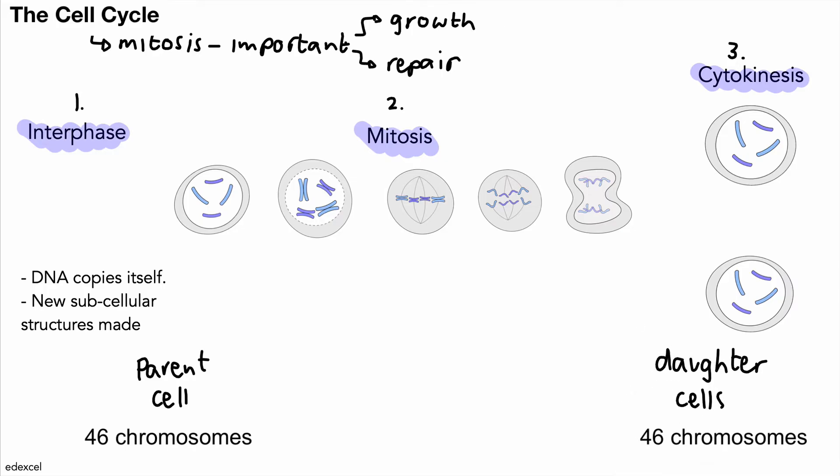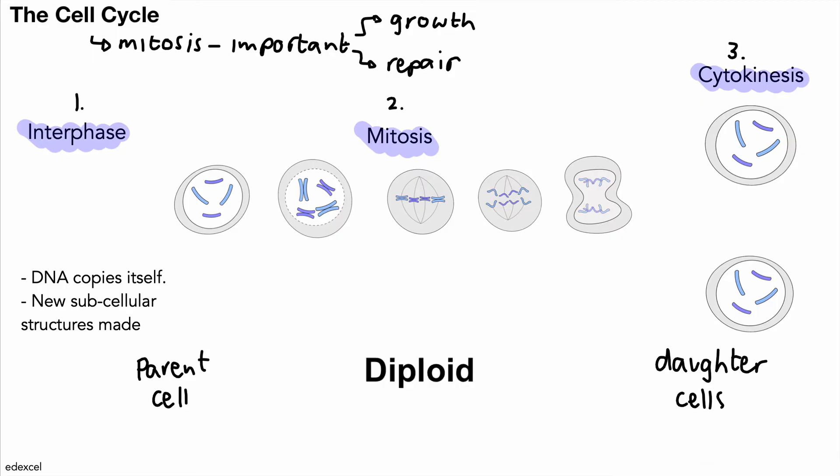In humans, the parent cells have 46 chromosomes — the DNA is arranged in 46 chromosomes — and the daughter cells also have 46 chromosomes each. We describe this number of chromosomes as diploid, so that's the full set of chromosomes that each cell has. The diploid number is different for different living things, but for humans it's 46.